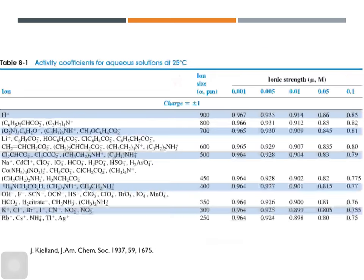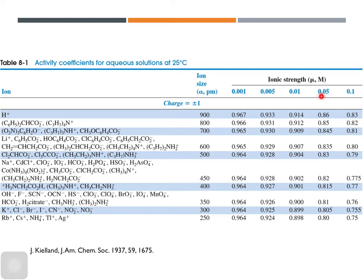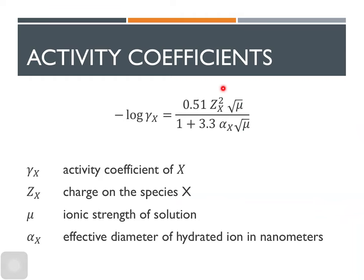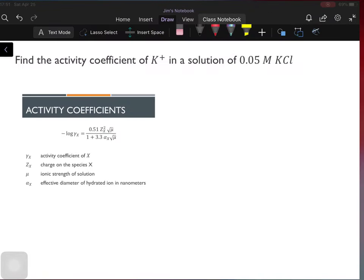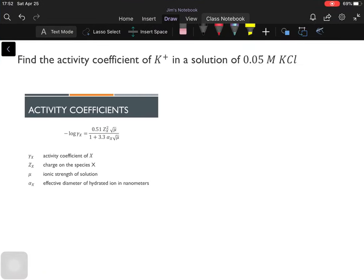So today I'm going to use 0.05 ionic strength and we'll compare our answer using Debye-Hückel equation with Kjelland's table. We'll see if we will get the same answer of 0.805. So let's try this. Find the activity coefficient of potassium in a solution with 0.05 molar KCl.